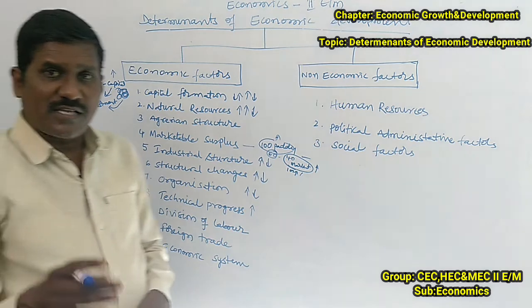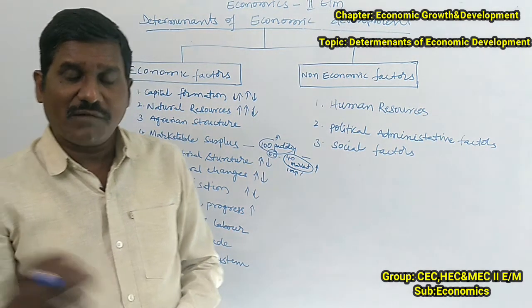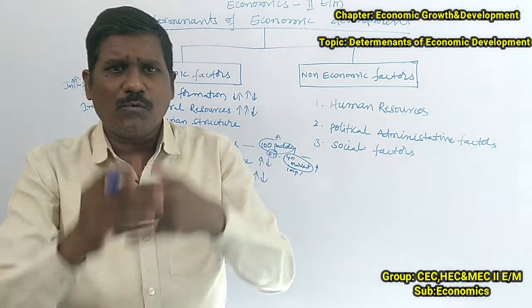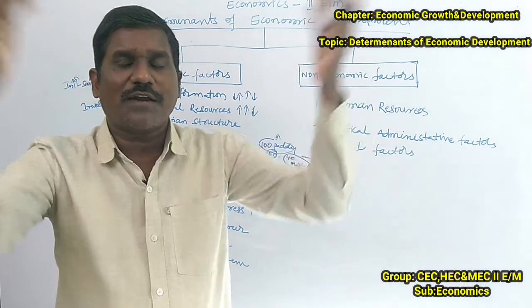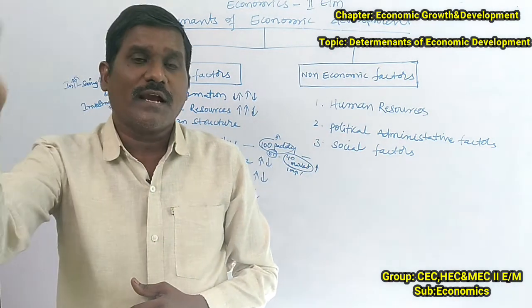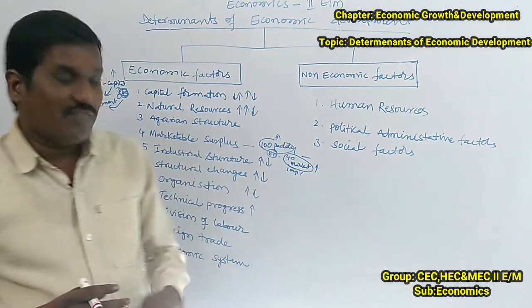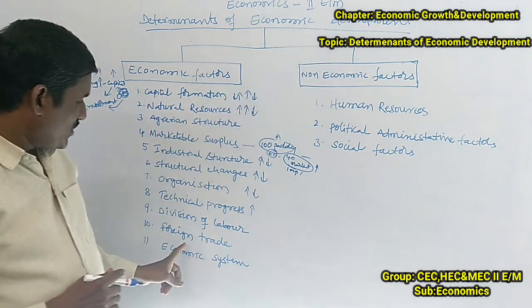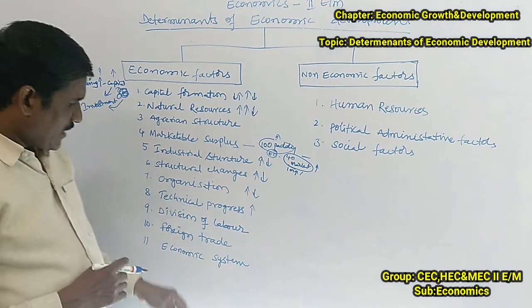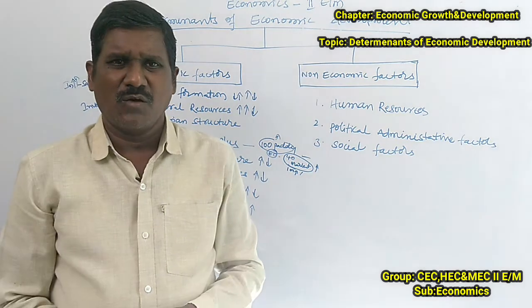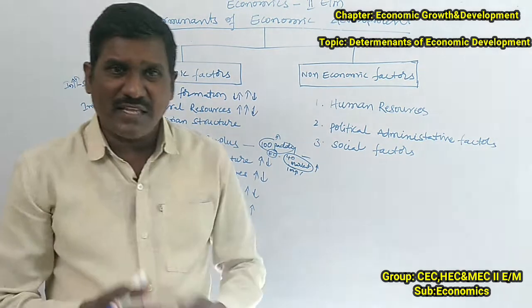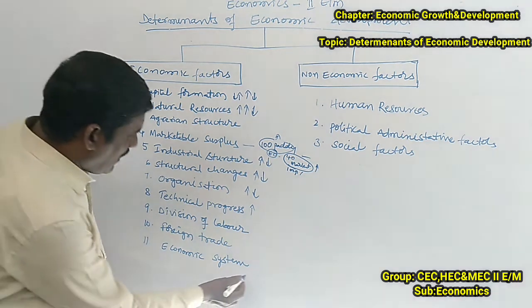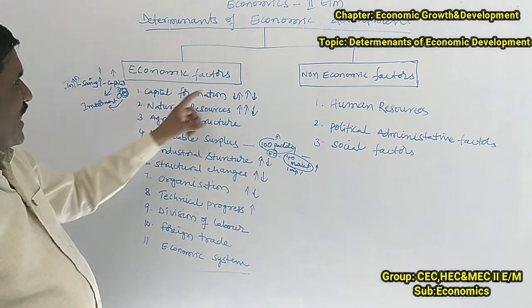The tenth factor is foreign trade. When agriculture, industrial, and service sector development increases productivity, it becomes possible to export goods and services to foreign countries. By earning more foreign exchange through exports, economic development is supported. Additionally, the economic system — its policies, structure, and changes — is also one of the factors of economic development. These are the economic determinants of economic development.